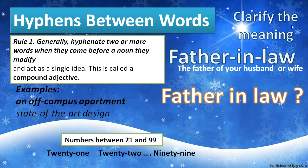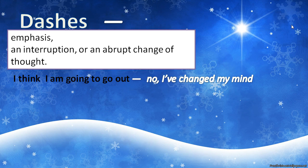Numbers between 21 and 99. Hyphenate the numbers between 21 and 99 — for example, twenty-one, twenty-two, twenty-three through twenty-nine, thirty-one, thirty-two, forty-one, forty-two, and so on up to ninety-nine. You can hyphenate all these numbers.